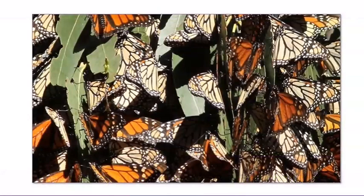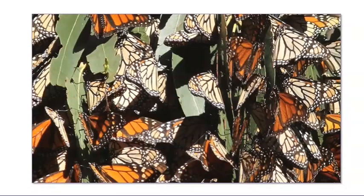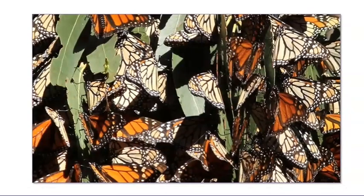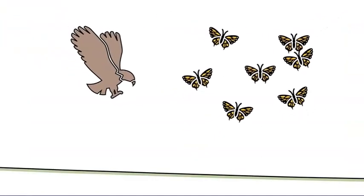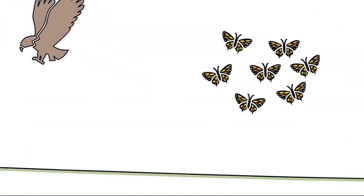Wow, look at these monarch butterflies. See how they are clustered together on the leaves of a tree or maybe a bush. What do you think they are all doing together in this group? Could this behavior help them survive? Well, scientists think butterflies might group together to protect one another from predators. If I were a tiny butterfly, I would want some other butterflies around to help keep me safe.